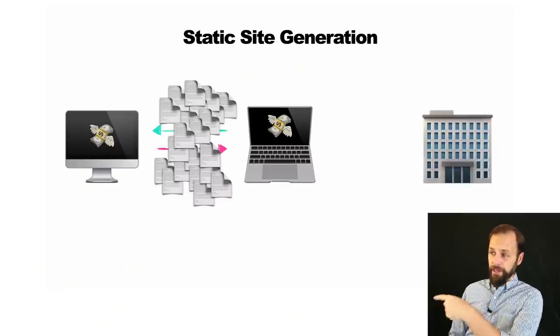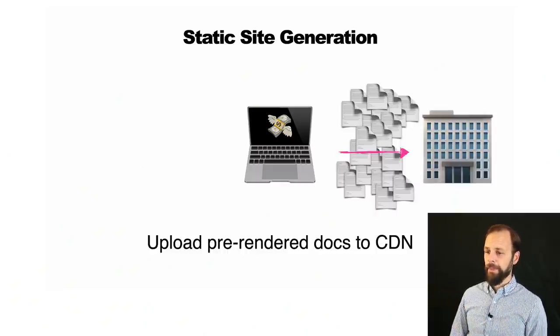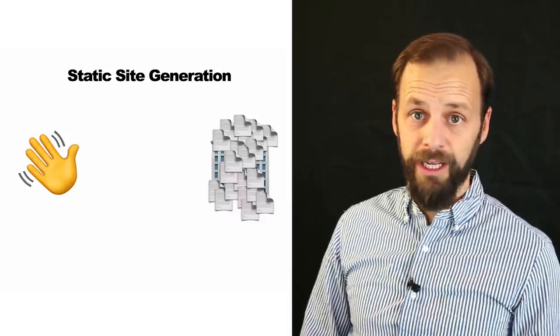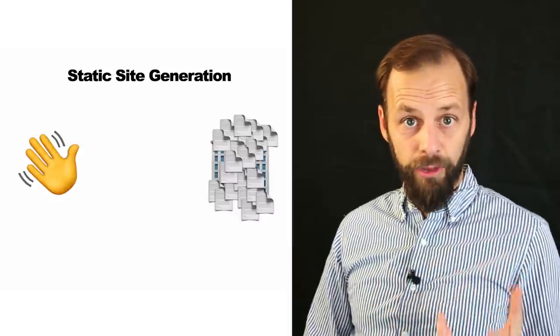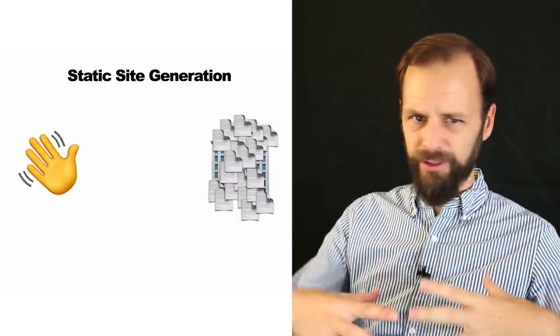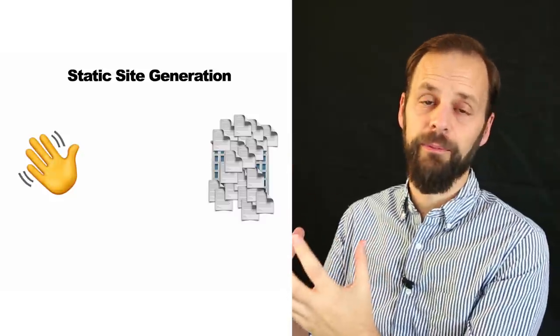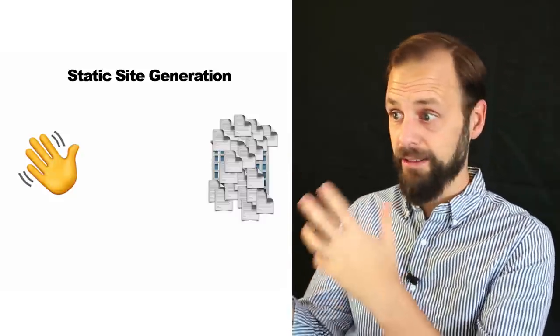There's compute happening locally. Maybe you're doing a build in the cloud, like Gatsby Cloud — you're paying for that too. Whenever there's compute happening, whether on some server or your local machine, building a static site costs money. Now you've got a CDN, and you upload everything to it. What's really great about static site generation is that all those documents are pre-rendered, pre-built — they're just static files sitting on a CDN waiting for someone to visit.